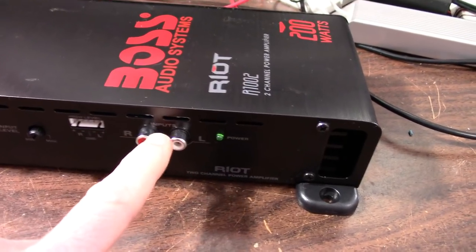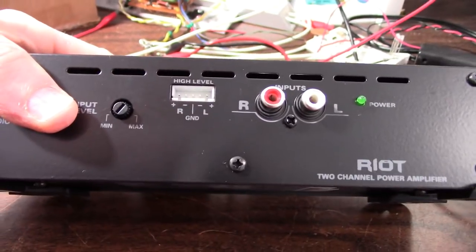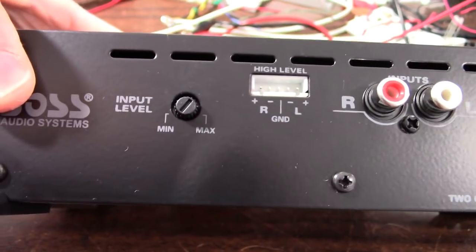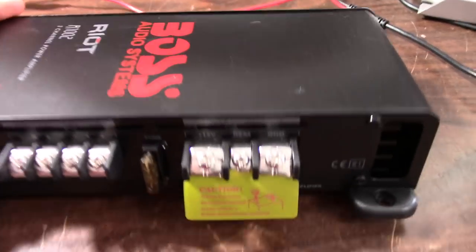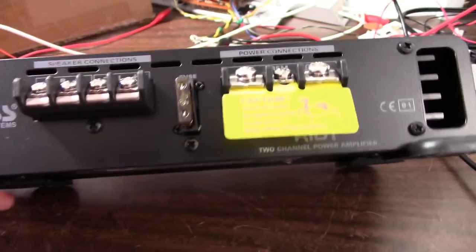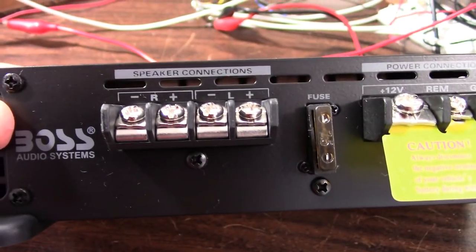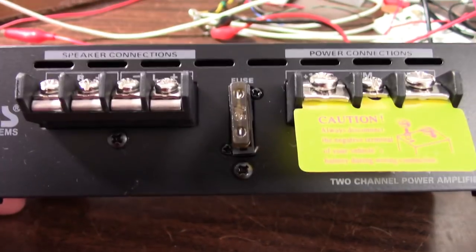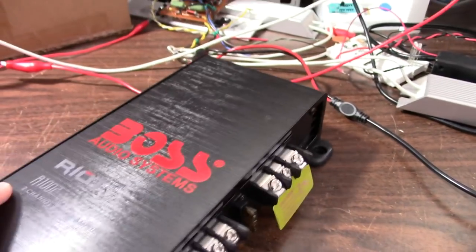This is the size of the unit right here. So you have your line level RCA, power light. That's where you put the high level in, as they're calling it here. Input level adjust, so you can match the sound output level with your other amps, or whatever you're using this with. And you have your power connections here. And your speaker output connections here. And there is the fuse.